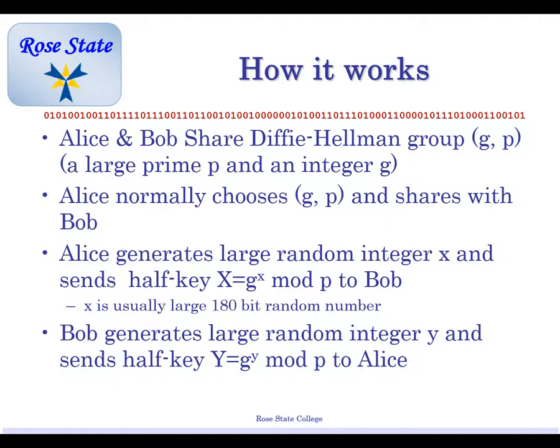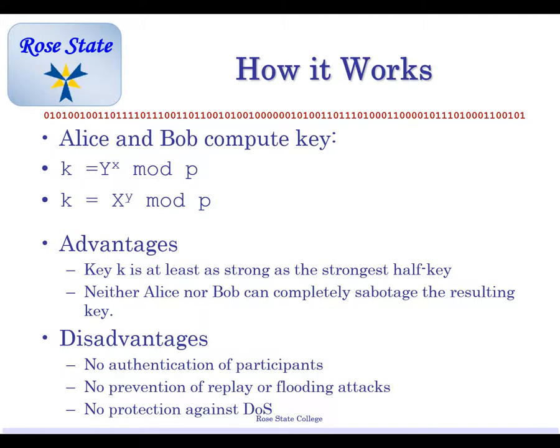X is usually a large 180-bit random number, but as it is with all of our assignments, we're using very small numbers to make it doable. Bob generates a large random number Y and sends his half key to Alice. And there's the math for that. Then they compute the key. So each of us are going to compute our own key, yet the keys are going to be the same.